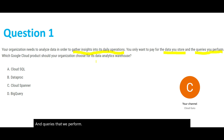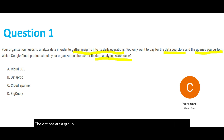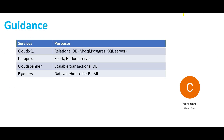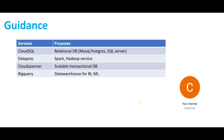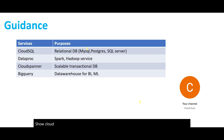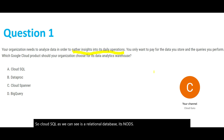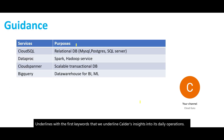The options are: A) Cloud SQL, B) Dataproc, C) Cloud Spanner, and D) BigQuery. Our team at Cloud Guru has devised a table with the purposes of the services. Cloud SQL is a relational database — it's an ODS — and it aligns with the first keyword we underlined: gathering insights into daily operations. So Cloud SQL is our potential answer for now.